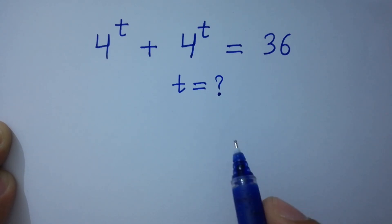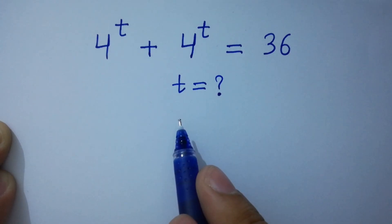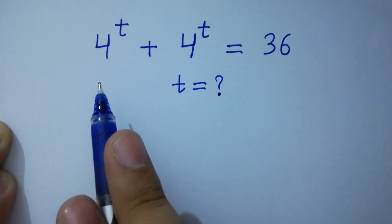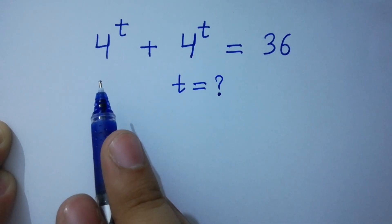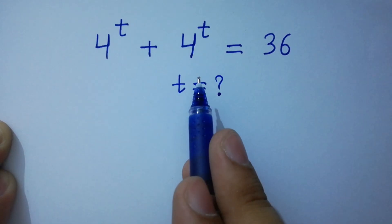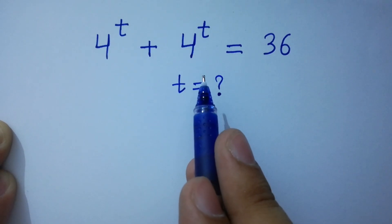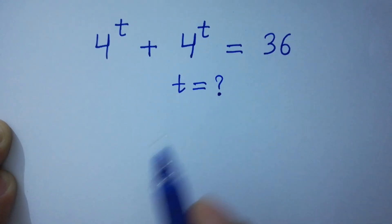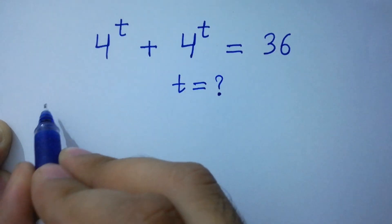Hello friends. Find the value of t if 4 to the power t plus 4 to the power t equals 36. Let's have a solution.